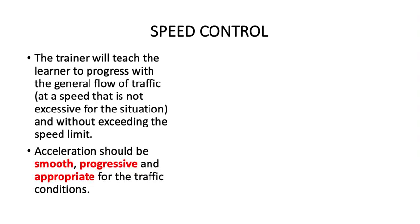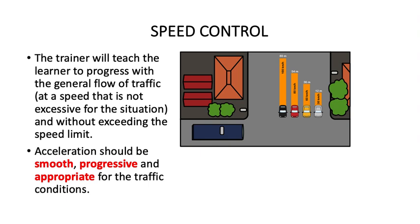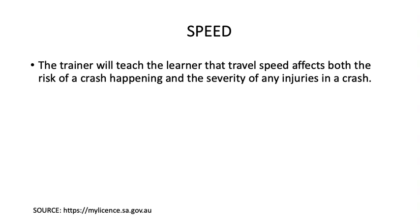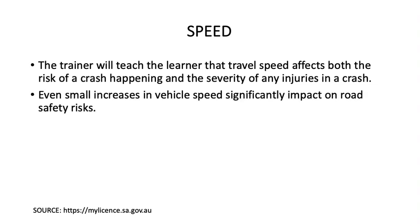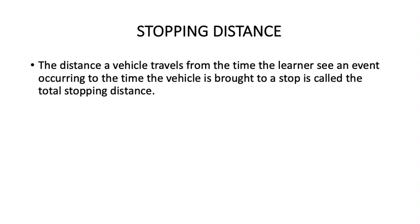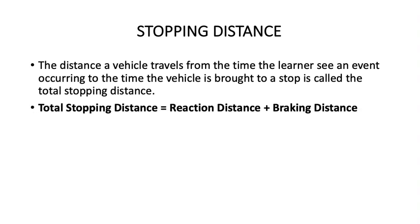Speed control: the trainer will teach the learner to progress with the general flow of traffic at a speed that is not excessive for the situation and without exceeding the speed limit. Acceleration should be smooth, progressive, and appropriate for the traffic conditions. Travel speed affects both the risk of a crash happening and the severity of any injuries. Even small increases in vehicle speed significantly impact road safety risks. Stopping distance is the distance a vehicle travels from the time the learner sees an event occurring to the time the vehicle is brought to a stop — equal to reaction time plus braking distance.